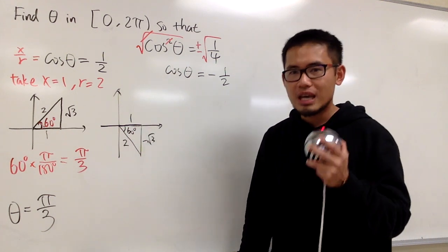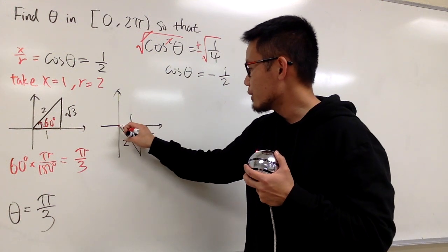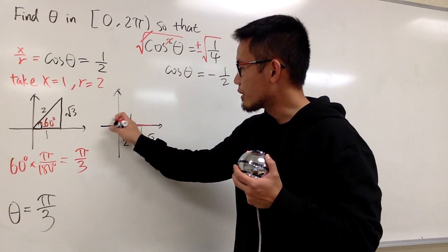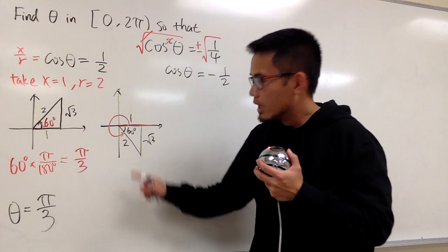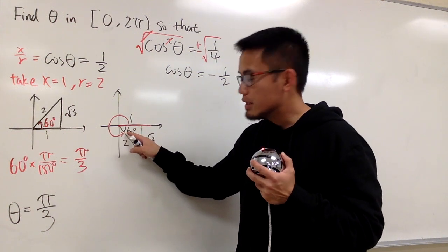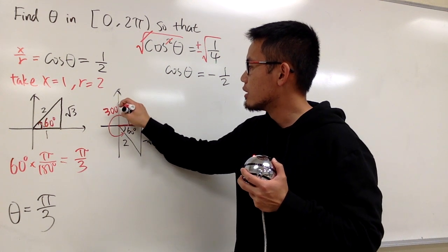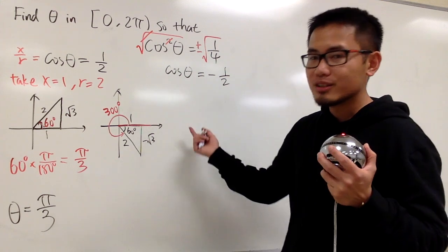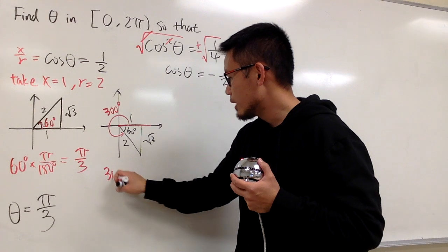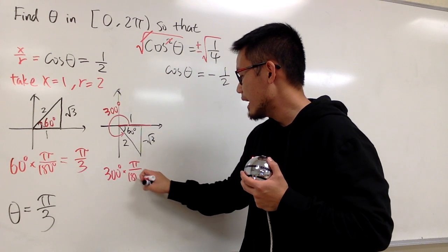And this is still going to be 60 degrees down below here. But in this case, do it carefully. This is the reference angle. That's not the answer. We have to keep track from the positive x-axis and rotate all the way from here to the terminal side. We know the whole circle has 360 degrees. This is 60 degrees already. That means the red part here is just 300 degrees. And that's pretty much the answer, but we just have to now convert this into radians.